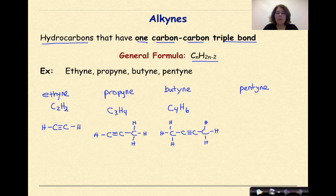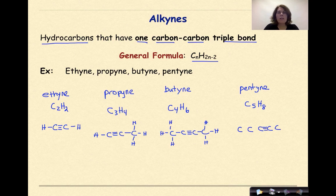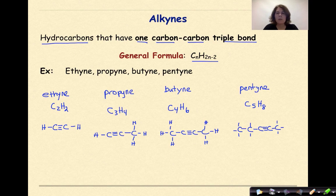Let's do one more: pentyne. Pent means five, so C5H8 — five times two is ten, minus two is eight. We put down five carbons, put a triple bond between two of them, fill the rest with single bonds, add enough bonds to make sure each carbon has four bonds, then add eight hydrogens. And we did — this is an example of how you would write alkynes.